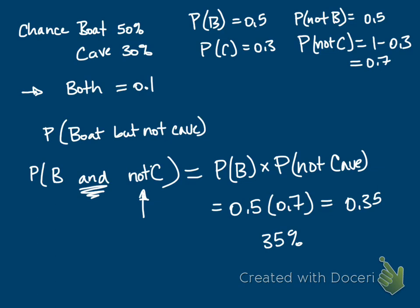That's a little bit weird, but basically you're just going to play around with probability of something and probability of not something. We use probability of the boat, probability of not boat, probability of the cave, probability of not cave, and then apply the AND and OR probability rules to the worksheet.